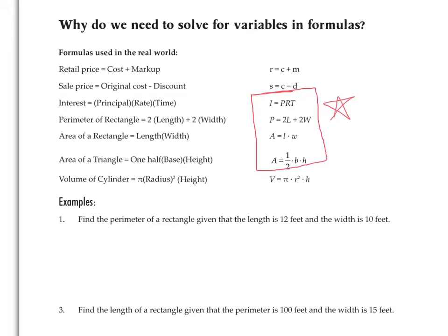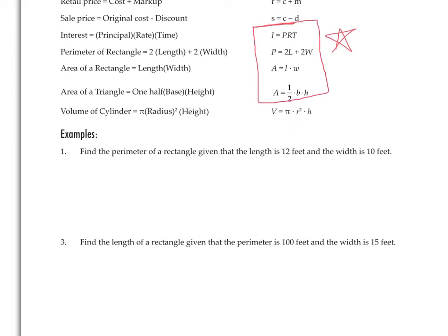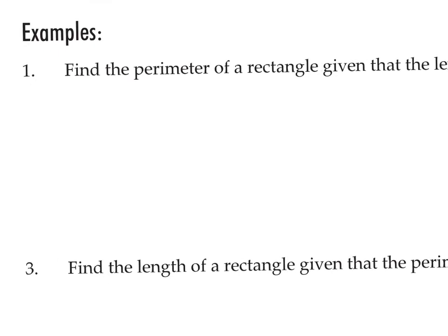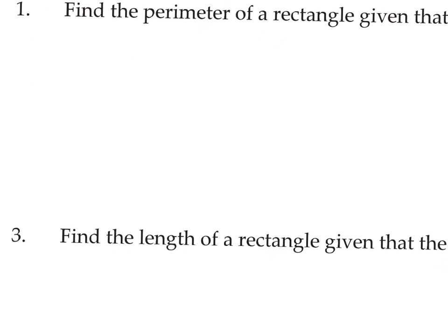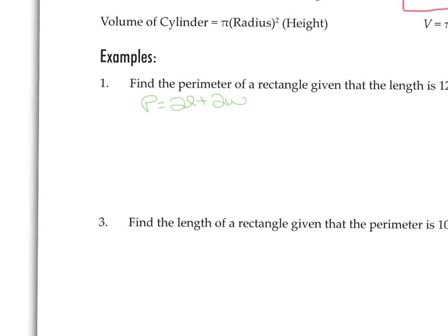So we're going to look at the first question. Find the perimeter of a rectangle given that the length is 12 feet and the width is 10 feet. We're talking about perimeter of a rectangle, so we're going to use the perimeter formula from up here. The formula for perimeter of a rectangle is P equals 2L plus 2W. That's the formula, so that's how we're going to start.